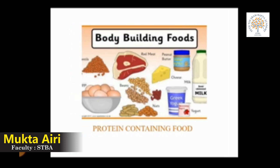Now let us see body building food. Body building food is called protein. The word protein comes from the Greek word 'proteinous' which means primary. Protein helps us to grow, builds muscles and repairs the damaged parts of our body. Food items like milk, egg, fish, curd and pulses contain protein. Food items rich in protein are known as body building food. Growing children need more protein because they are still growing.